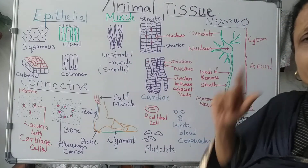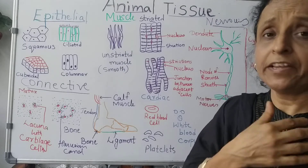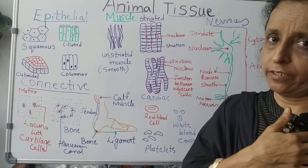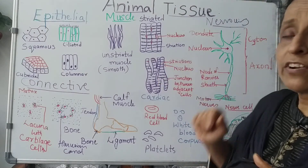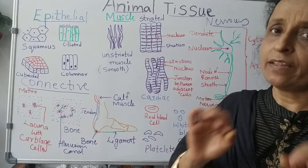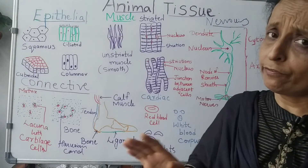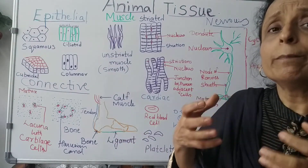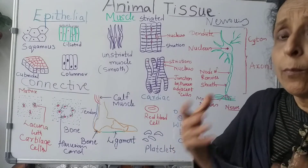Then there is a special type of muscle present in the heart — cardiac muscle. Anything to do with the heart is cardiac. These muscles have striations and they are branched. They are very strong and work throughout our life without getting tired, continuously pumping blood to different parts of the body.